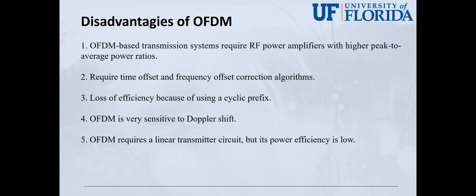Since the OFDM spectrum is transmitted through multipath, a guard band is required to avoid ISI error caused by timing offset. But using a cyclic prefix will result in a loss of efficiency. OFDM is very sensitive to Doppler shift. OFDM requires a linear transmitter circuit, but its power efficiency is very low.